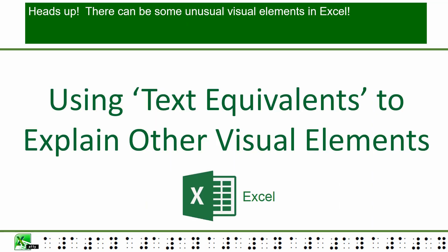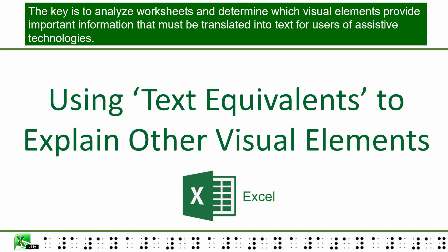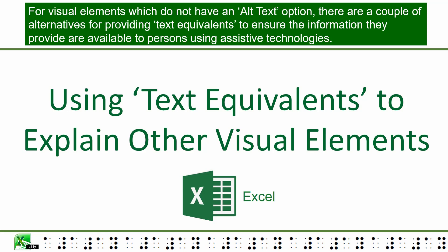Heads up — there can be some unusual visual elements in Excel. The key is to analyze worksheets and determine which visual elements provide important information that must be translated into text for users of assistive technologies. For visual elements which do not have an alt text option, there are a couple of alternatives for providing text equivalents to ensure the information they provide is available to persons using assistive technologies.